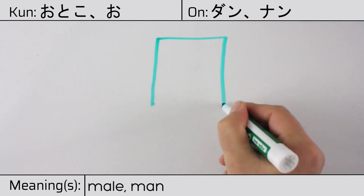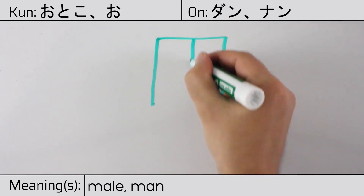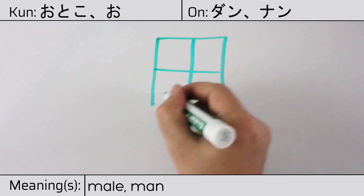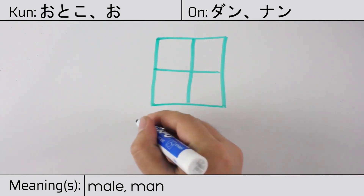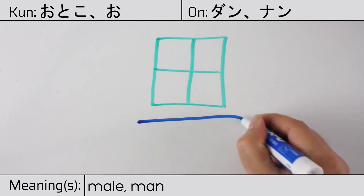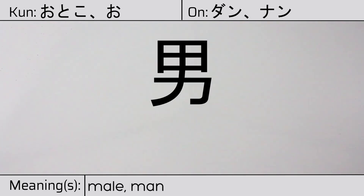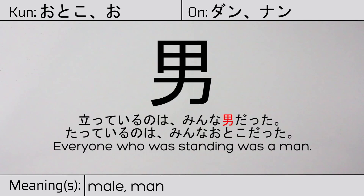You can remember this kanji by the following hint: the fields can use a man's strength. Our example sentence is: たっているのはみんなotokoだった — Everyone who was standing was a man.